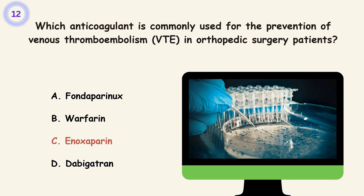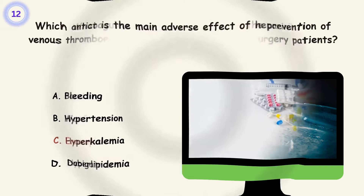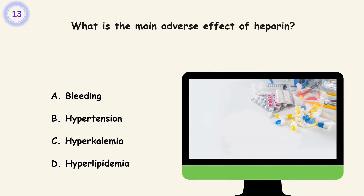Question 13. What is the main adverse effect of heparin? A. Bleeding. B. Hypertension. C. Hyperkalemia. D. Hyperlipidemia. Answer is A. Bleeding.